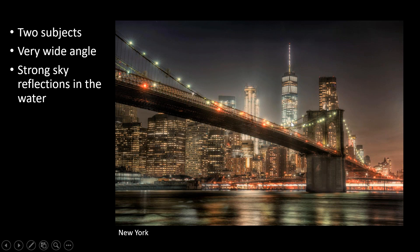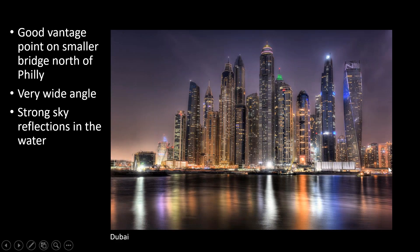This Dubai shot required perspective correction because the buildings were leaning after shooting. Good reflections in the water even though it was very rough — this is almost a minute and a half of exposure over five bracketed exposures to get even reflections. When you see images with very good reflections, they're always shot with longer exposures on a tripod.